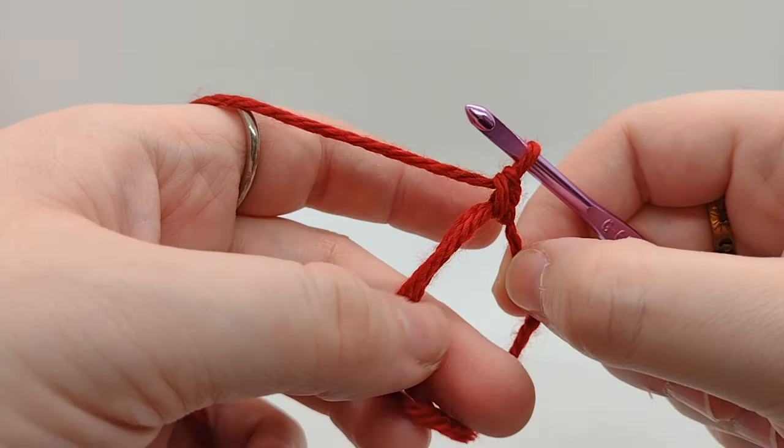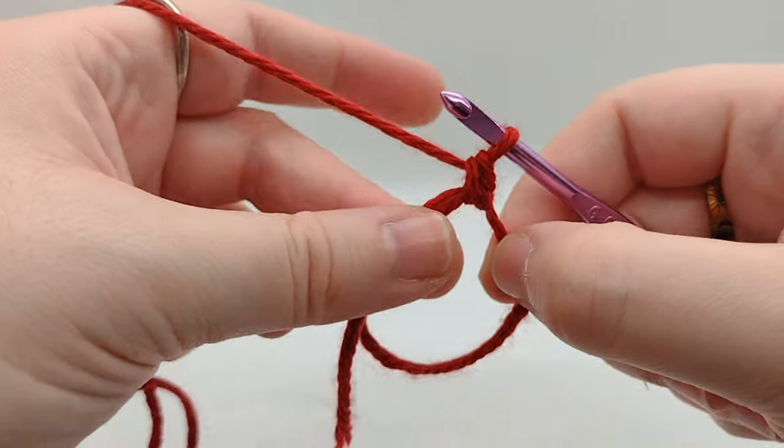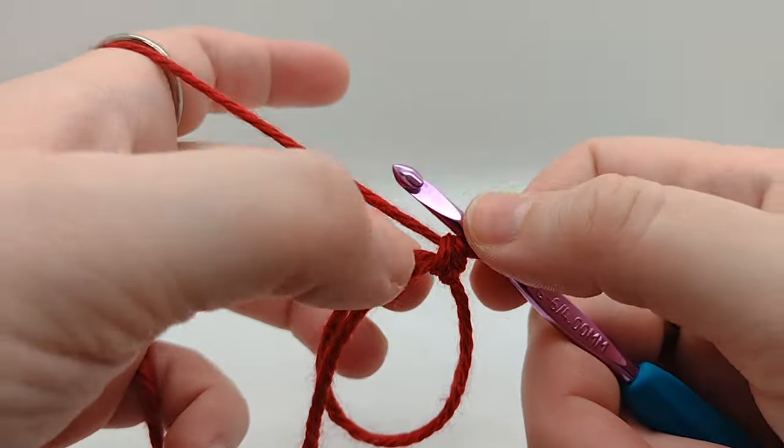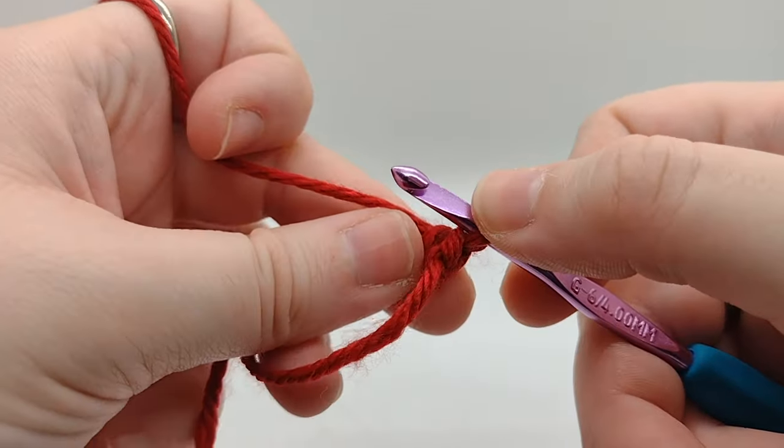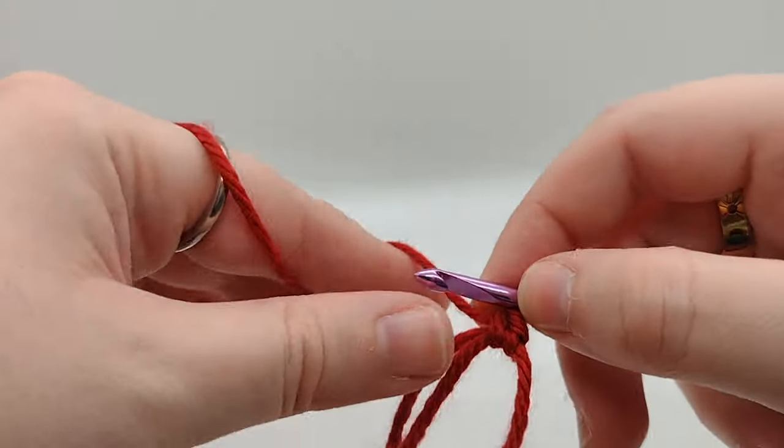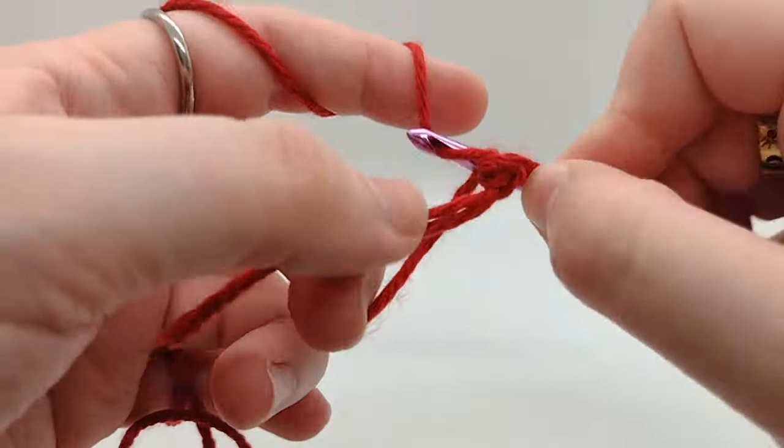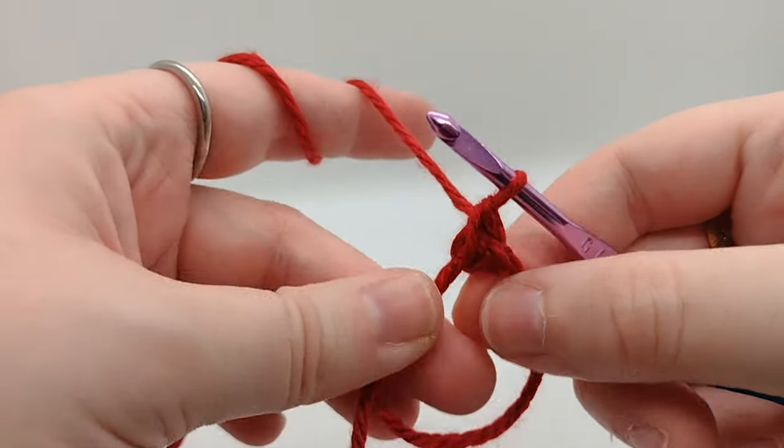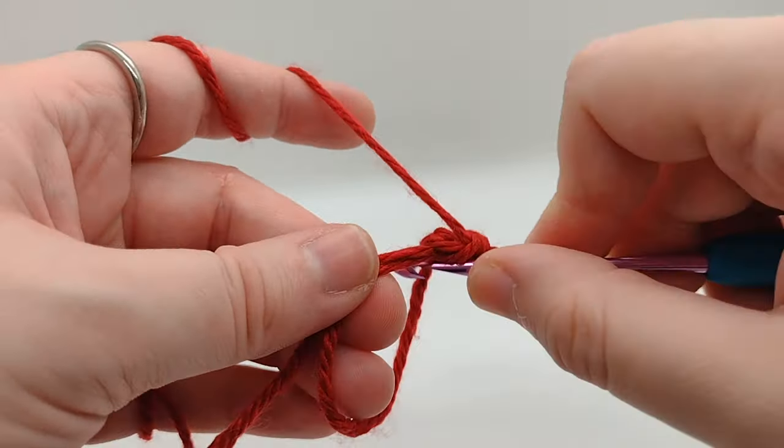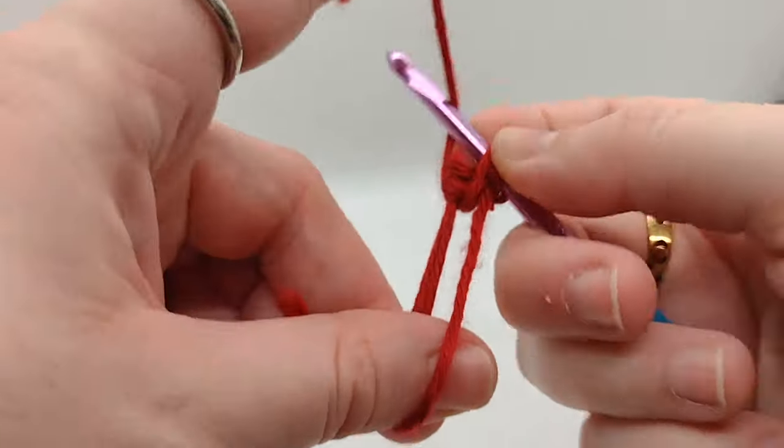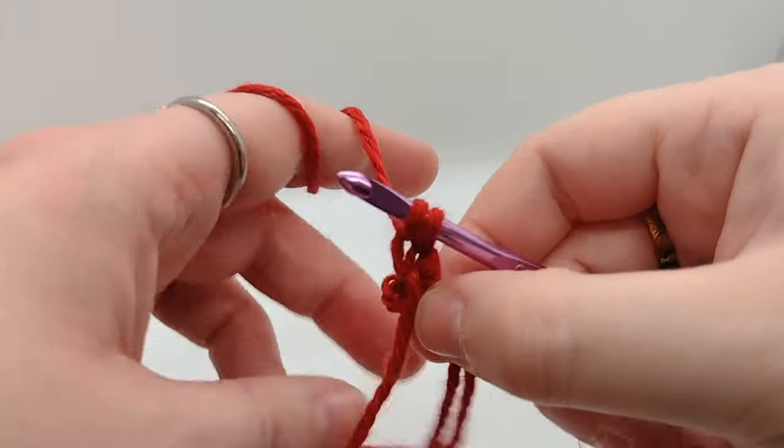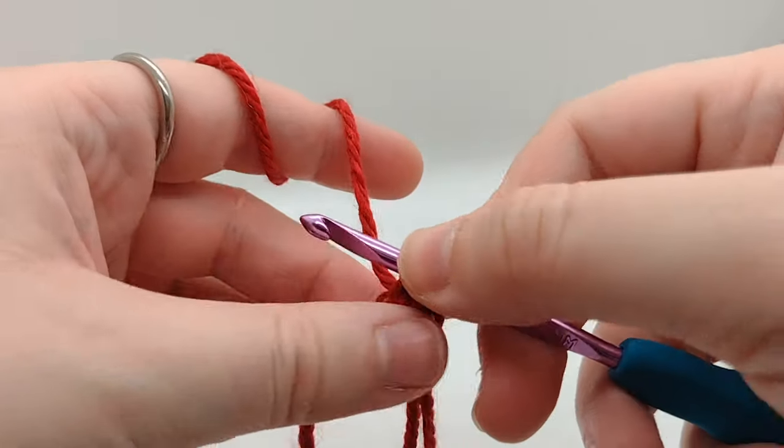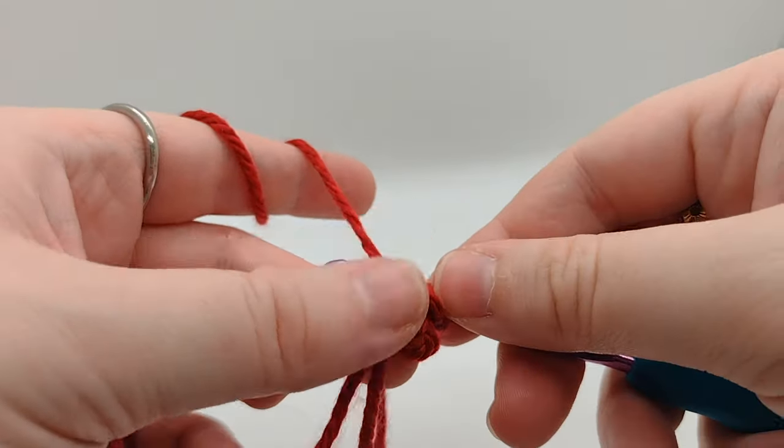I'm also just pulling this through so it doesn't get tangled. And then you're going to do however many the pattern calls for. I've noticed normally this is six, so this is one. I'm gonna not narrate so that I can actually look at what I'm doing. And this is also kind of an awkward angle for me. So that's two, three, and you can see, okay, I messed up here.